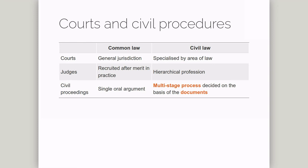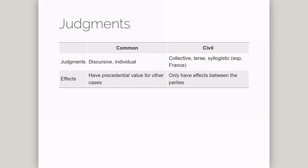These differences have consequences for judgements in the two systems. Because judges in the civil law system are supposed to be mechanically applying a code, their judgements are typically quite short and are only supposed to resolve a particular case. In common law systems, judgements can be more individual and can establish precedent. In code law systems, judgements aren't supposed to have these kinds of consequences beyond the immediate legal dispute.